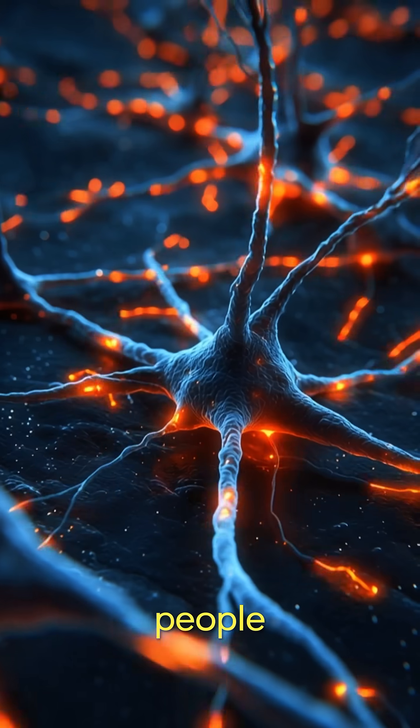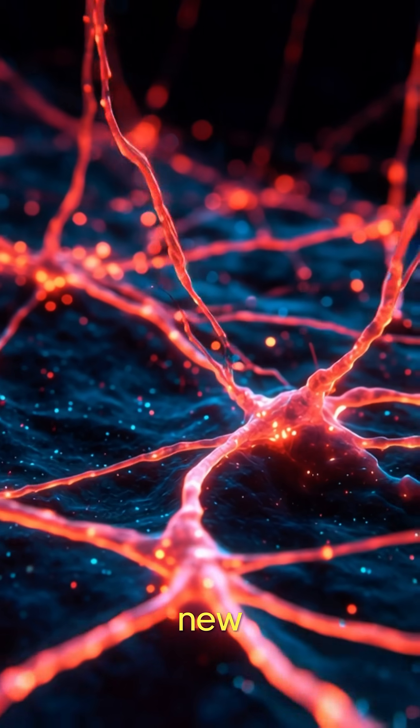Highly intelligent people have flexible neural networks that rewire faster when new information appears.